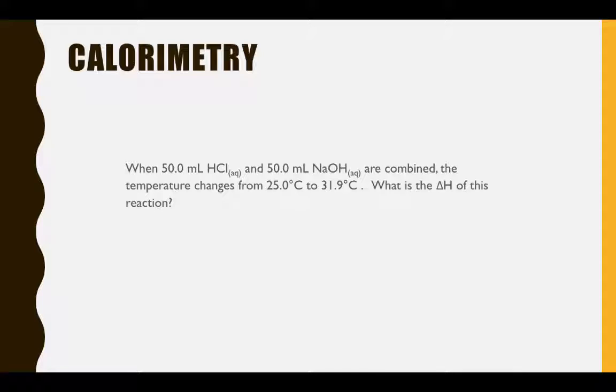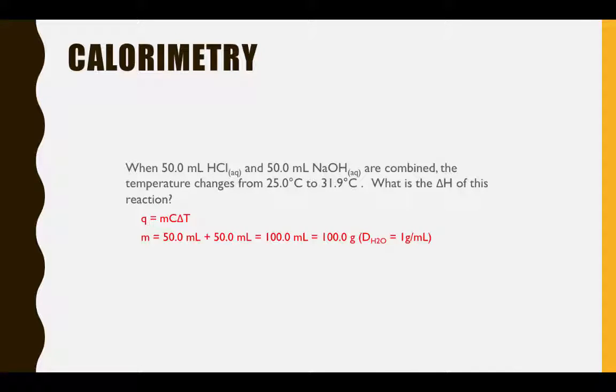and we're asked to calculate the enthalpy of this reaction. First, let's consider the values for each of the variables in our equation. Since we've combined 50 milliliters of HCl and 50 milliliters of NaOH, our resulting solution will be 100 milliliters. Since the density of water is 1 gram per milliliter, this means we're dealing with a mass of 100 grams.